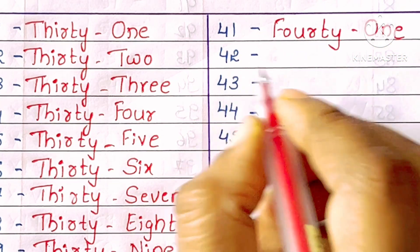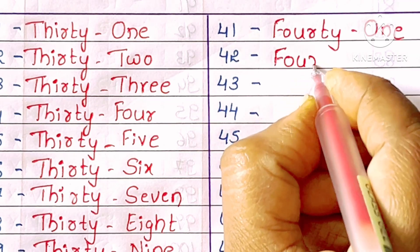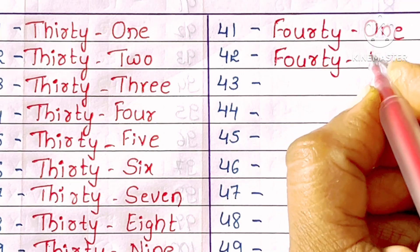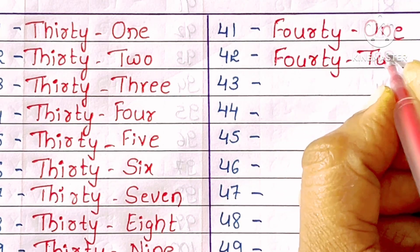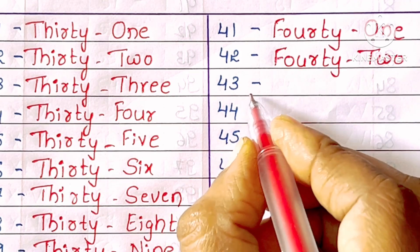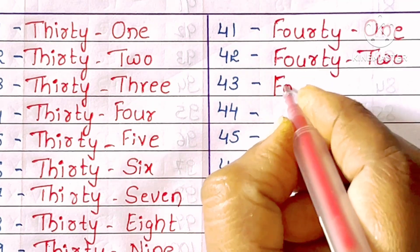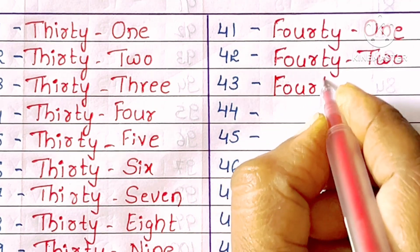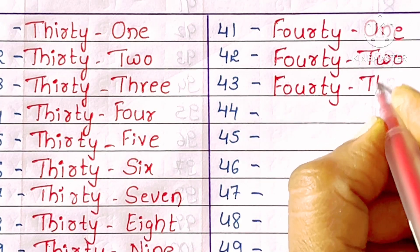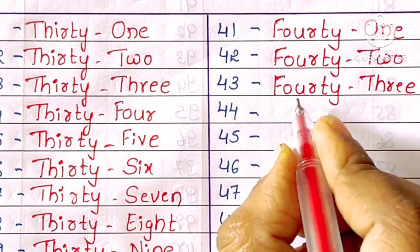42. F-O-U-R-T-Y-T-W-O. Forty-two. 43. F-O-U-R-T-Y-T-H-R-double E. Forty-three.